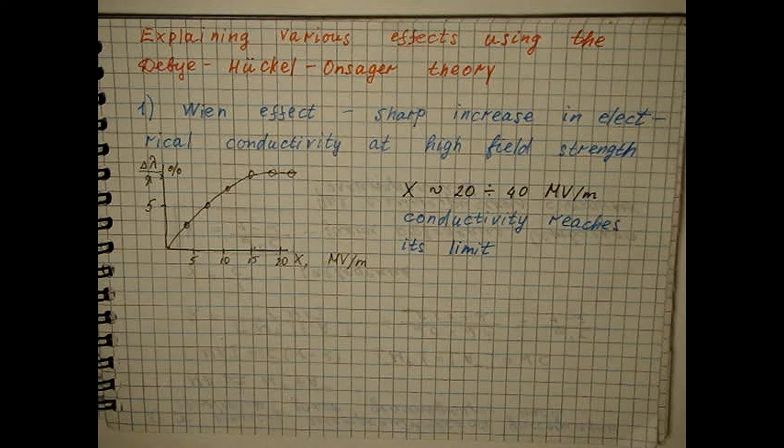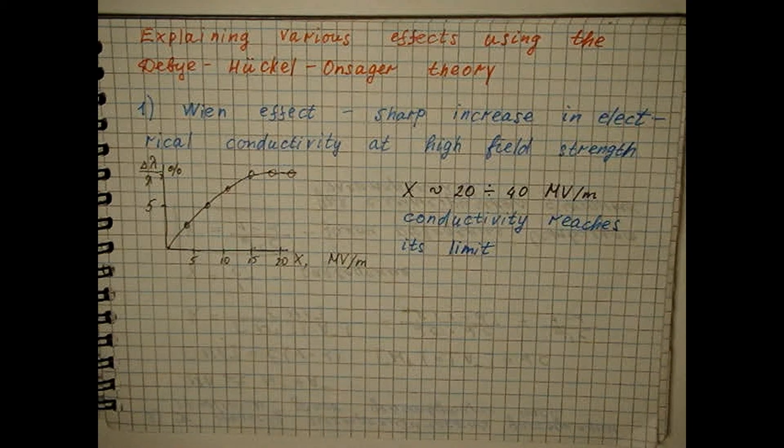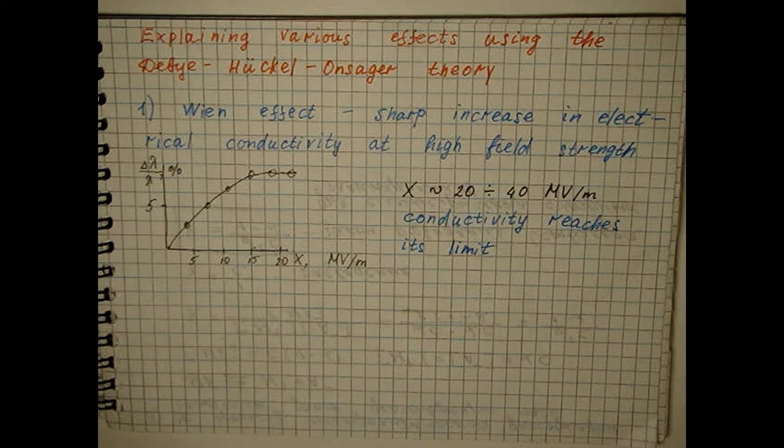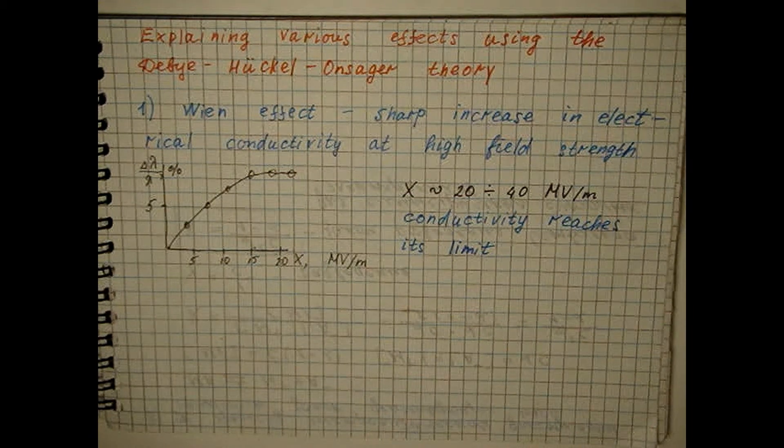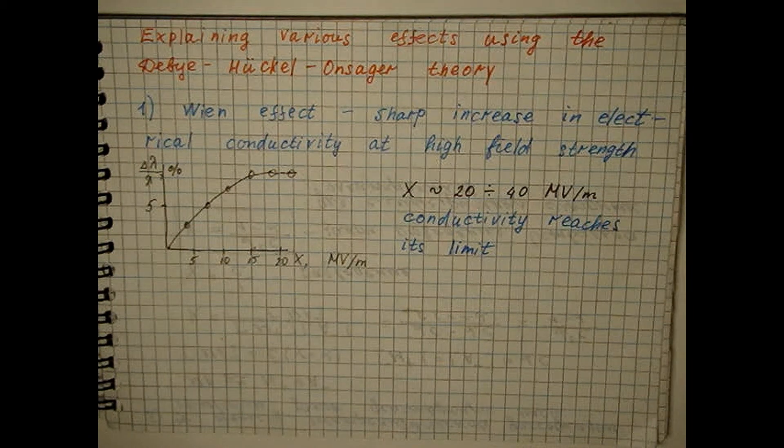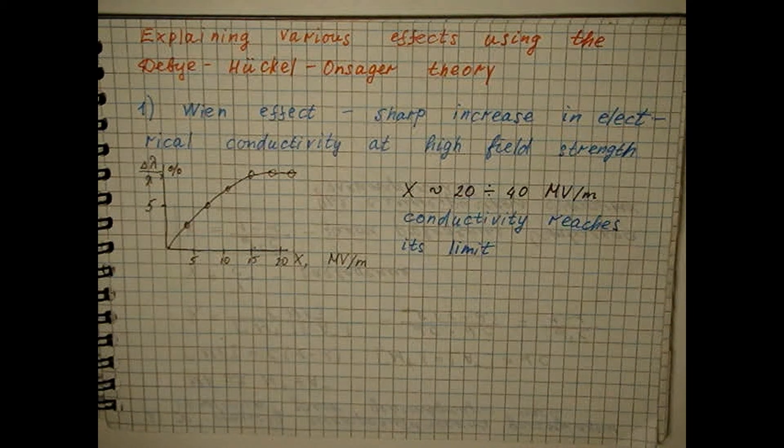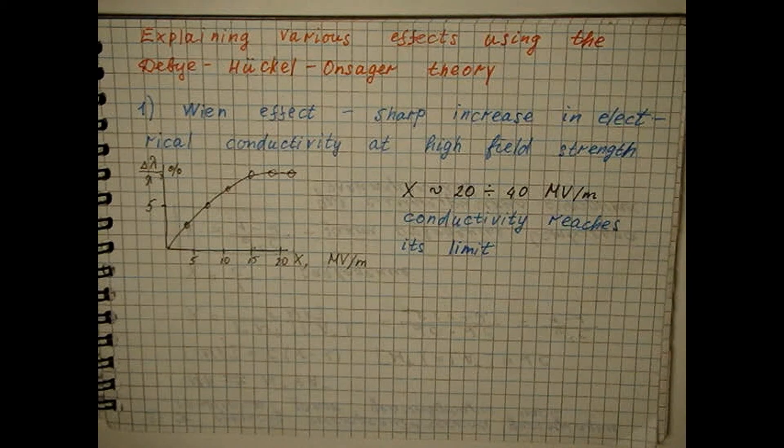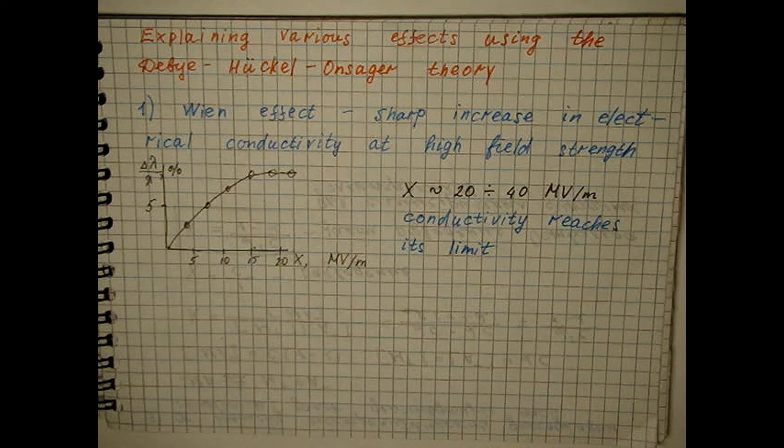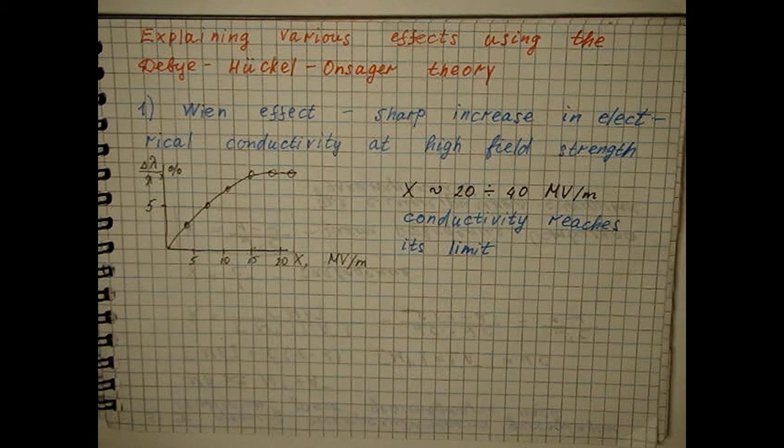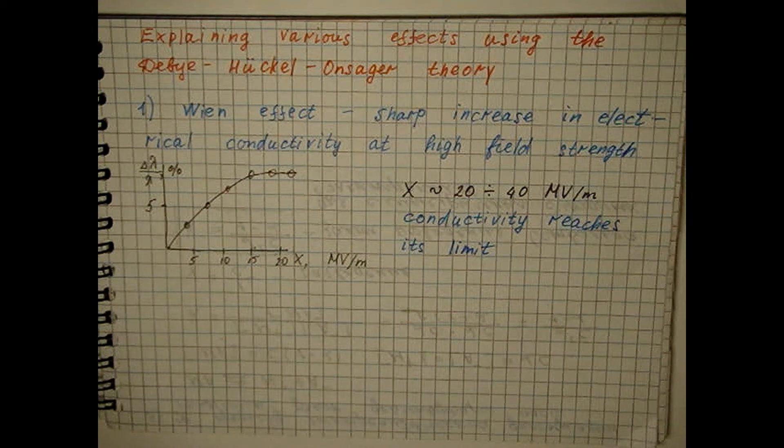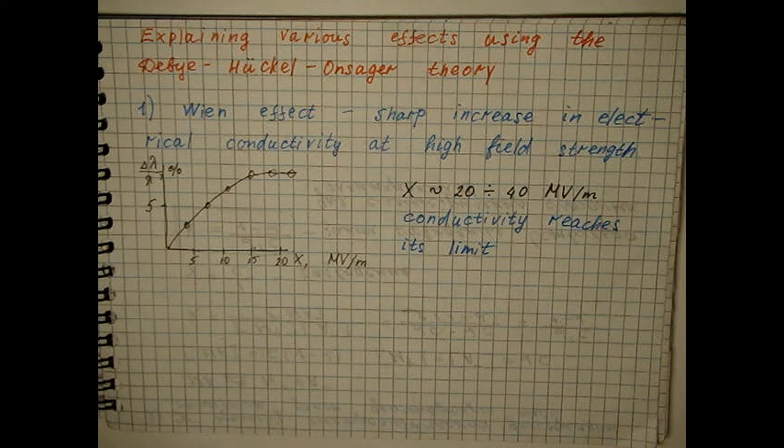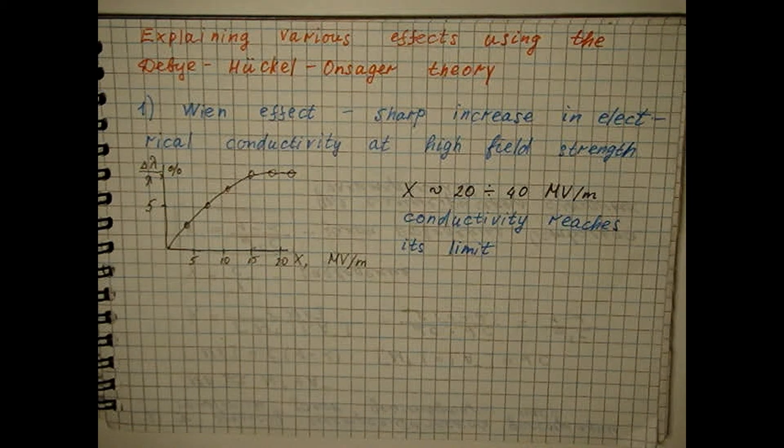The Wien effect is in contradiction with Ohm's law, and therefore it received recognition only after careful experimental verification. According to the theory of Debye-Hückel-Onsager, the Wien effect can be easily explained. At high field strength the velocity of the ion becomes so high that the ionic atmosphere does not have time to form, and its inhibitory effect disappears.